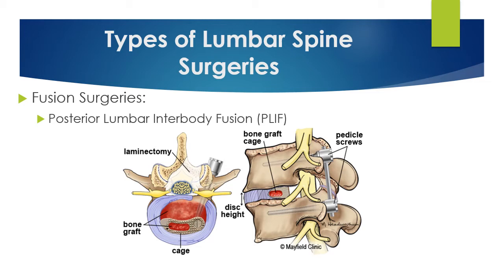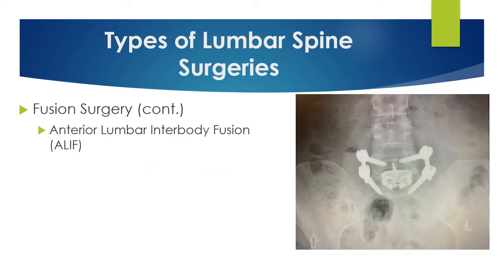There is a posterior lumbar interbody fusion, in which the surgeon inserts the hardware from the posterior side, which is the back. Another type is called an ALIF, or anterior lumbar interbody fusion, where the surgeon approaches from the front of the spine. This normally only takes place at the L5-S1 level.